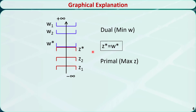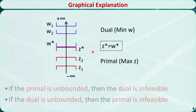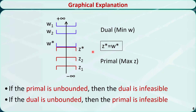Based on this graphical explanation, we can also derive two additional lemmas. If the primal is unbounded, then z* is infinitely large, and so is w*, meaning the dual is infeasible. If the dual is unbounded, then w* is infinitely small, and so is z*, meaning the primal is infeasible.